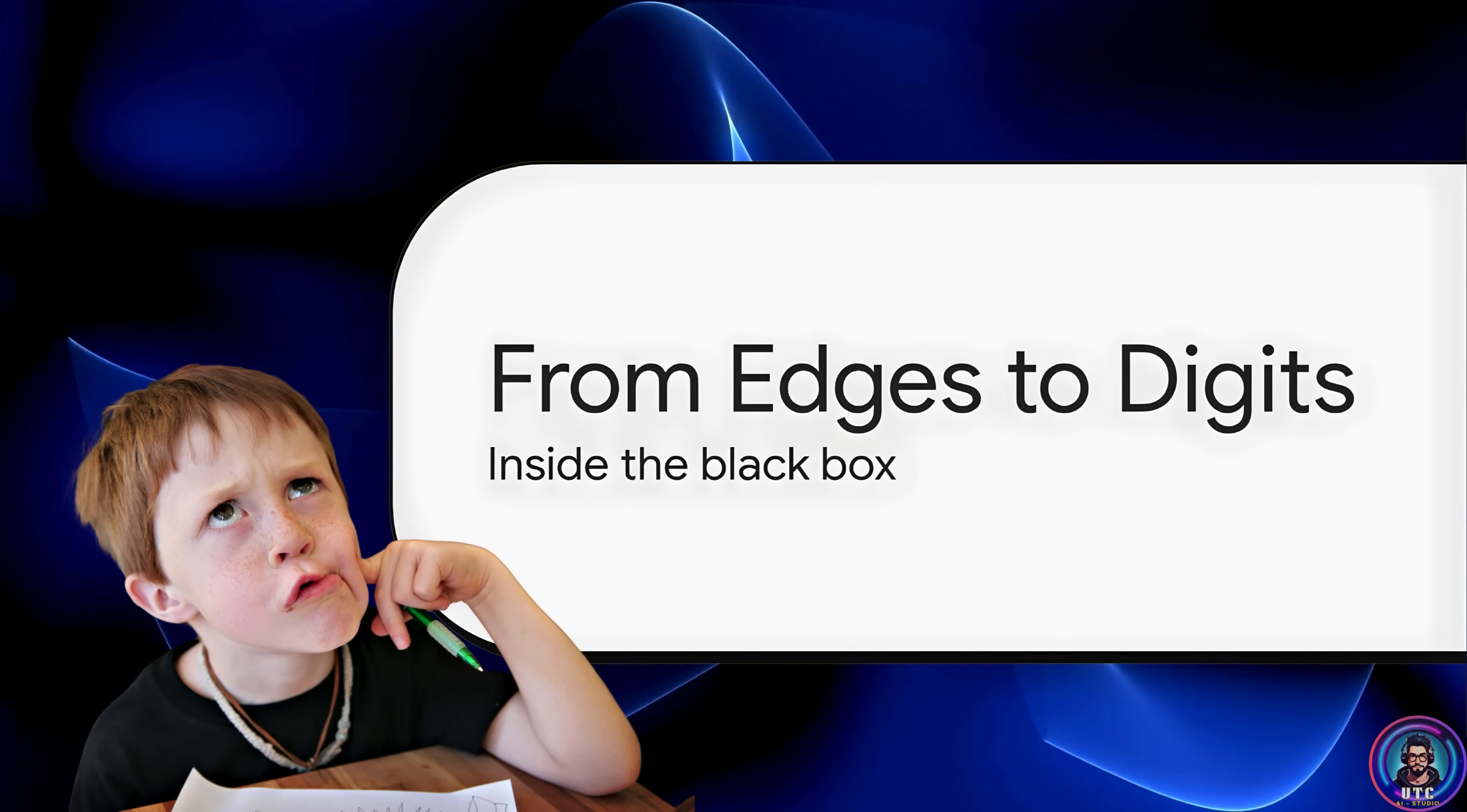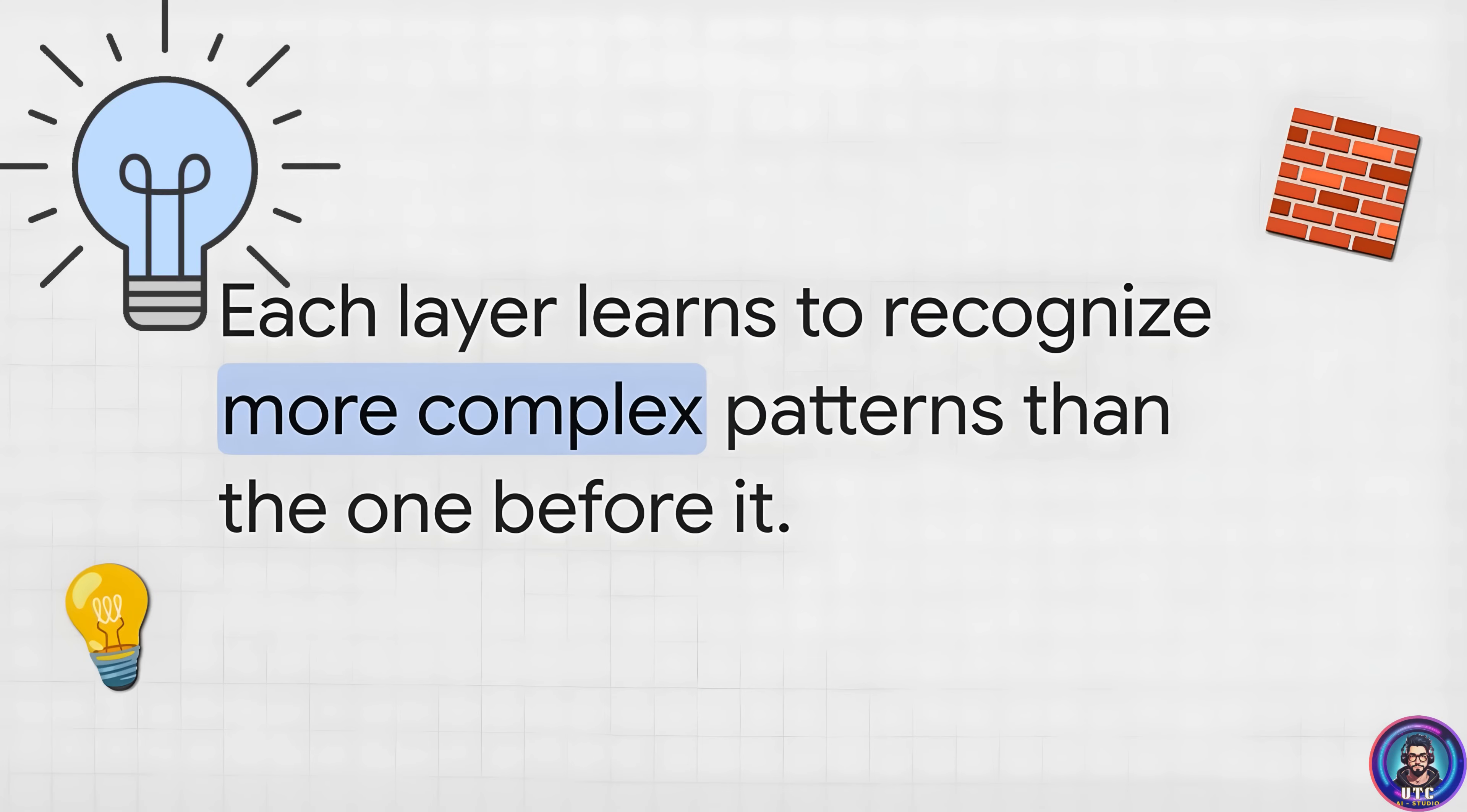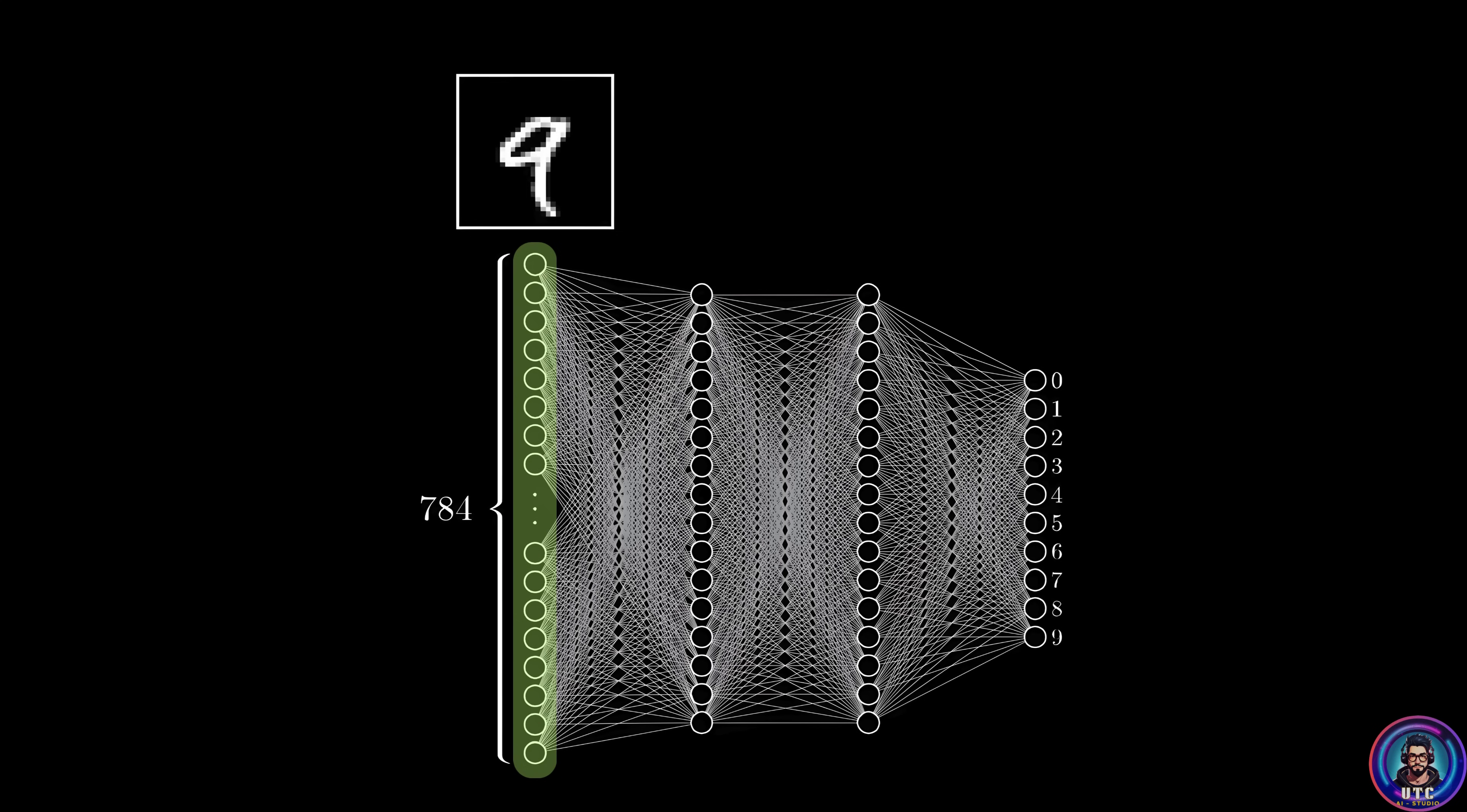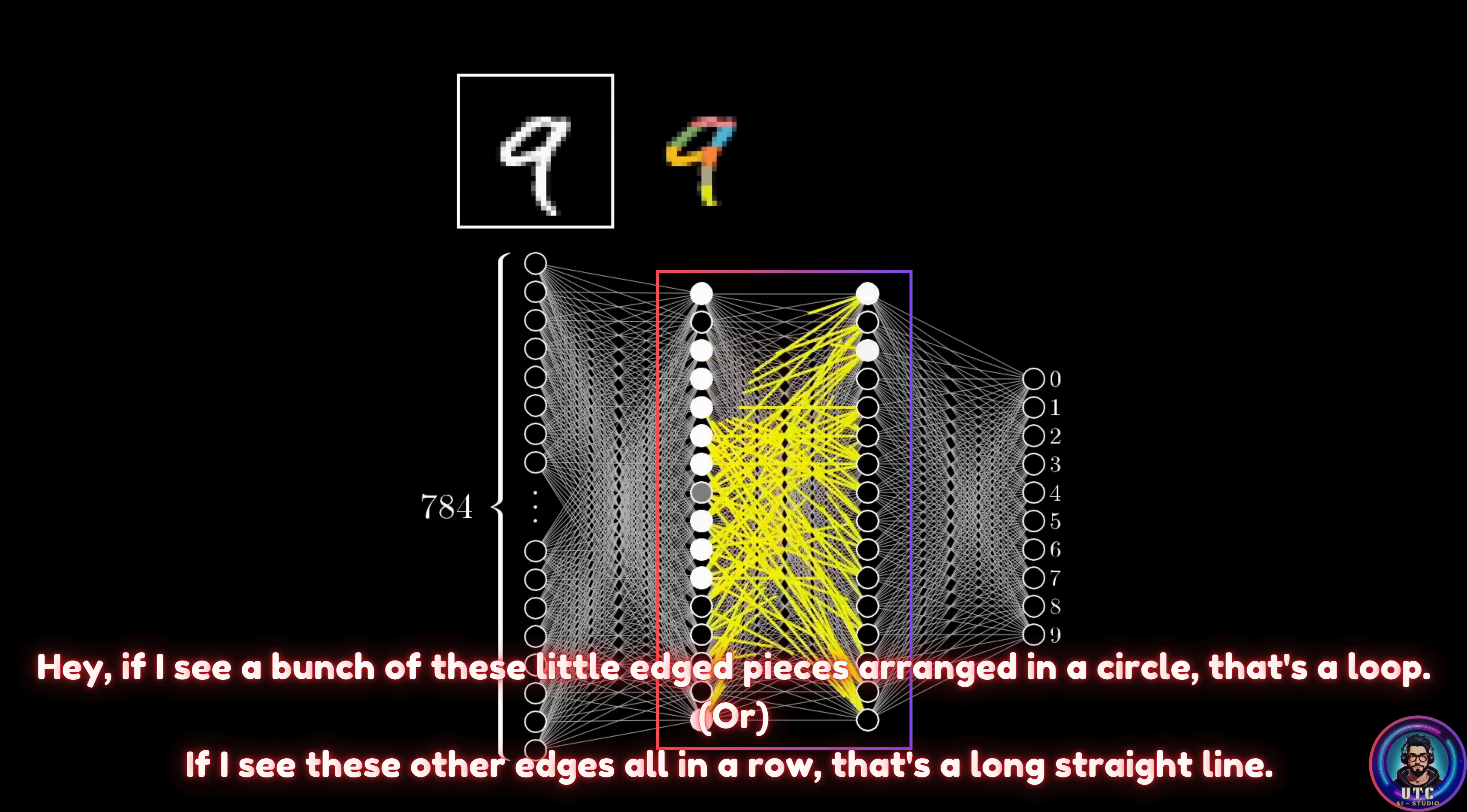Now let's tackle that mystery. What on earth is going on inside those hidden layers? This is where we figure out how these things actually think. So let's crack open that black box. The big idea, and it's actually beautiful in its simplicity. The network learns by building things up by step in a hierarchy. Each layer learns to spot more complex patterns. But it does it by using the simpler patterns that the layer before it already found. It's like building with Legos. Let's trace how it would recognize say the number nine. The first hidden layer. It's not looking for a nine. It's way too simple for that. It just learns to spot tiny basic things like little diagonal edges or small horizontal lines just by looking at the raw pixels. Then the second hidden layer looks at what the first layer found. It sees the pattern of activated edges. And it learns to combine them into bigger shapes. It's basically saying, hey, if I see a bunch of these little edged pieces arranged in a circle, that's a loop. Or if I see these other edges all in a row, that's a long straight line.